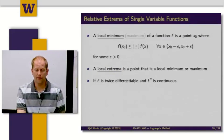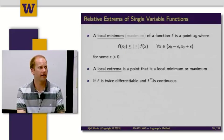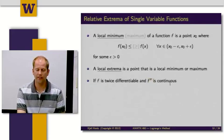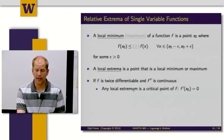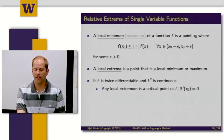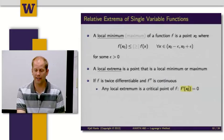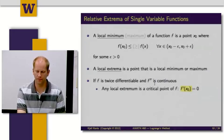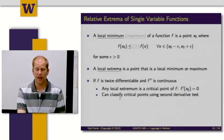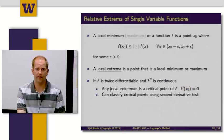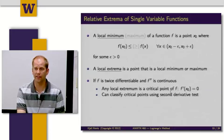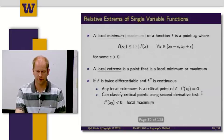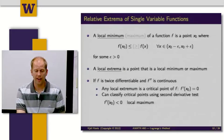If f is twice differentiable, so the function f has two derivatives, and if the second derivative is continuous, then any local extremum is a critical point of f. So that means that f'(x0) is equal to 0. We can also use the second derivative test, the second order condition to classify a critical point. If f''(x0) is strictly less than 0, that's a local maximum.